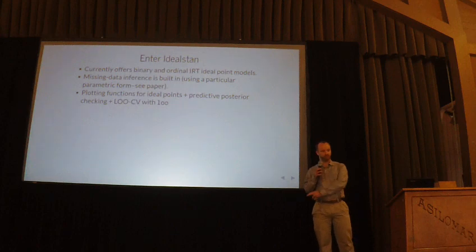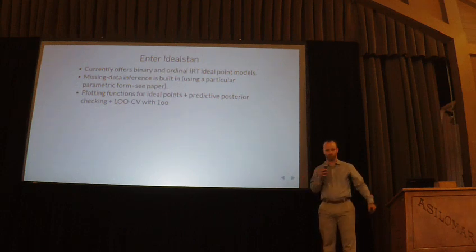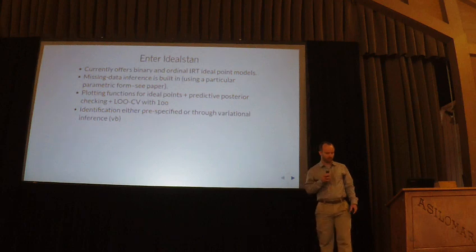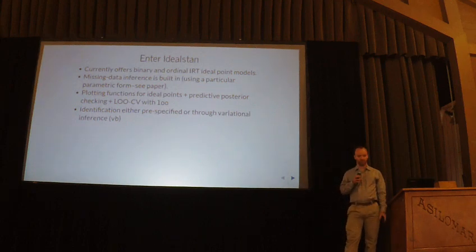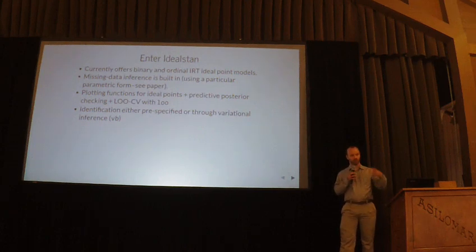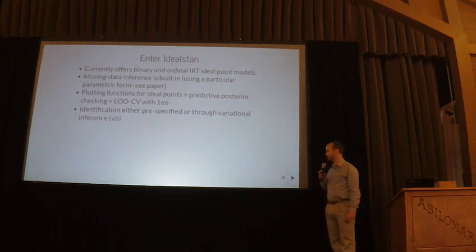It also includes posterior predictive checks for all the models, so the Bayesian data analysis people will invite you to their birthday. And it includes LooCV — the ability to calculate leave-one-out cross-validation estimates with the Loo package. Finally, I used some tricks with the variational Bayesian inference part of Stan — it can actually automatically identify a model. You don't have to tell it which parameters to constrain, which makes things really easy to use.